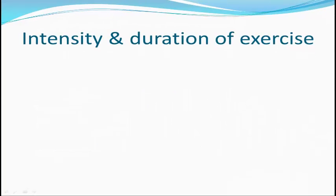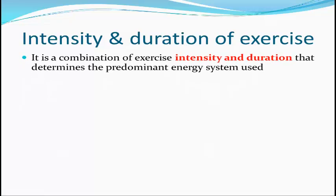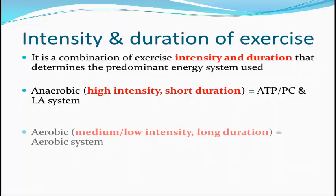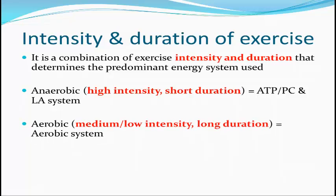The first factor that affects the energy systems used is intensity and duration of exercise. It is a combination of exercise intensity and duration that determines the predominant energy system used. If the exercise is of high intensity and short duration, such as a 100m or 400m sprint, we predominantly use the ATP-PC and lactic acid system as it is a predominantly anaerobic activity. If exercise is of medium to low intensity and long duration, we predominantly use the aerobic energy system, such as in a triathlon or marathon.